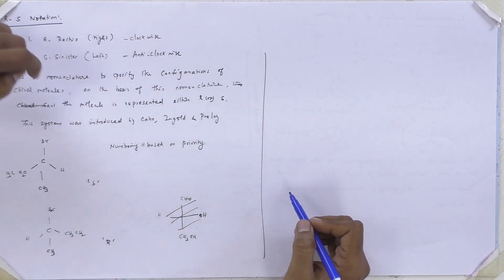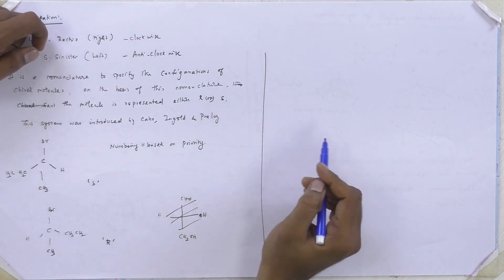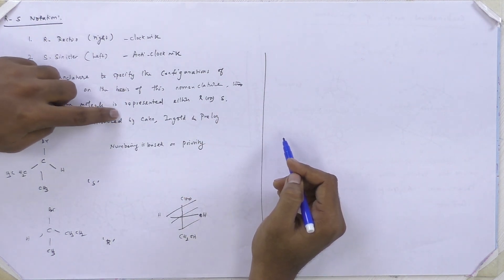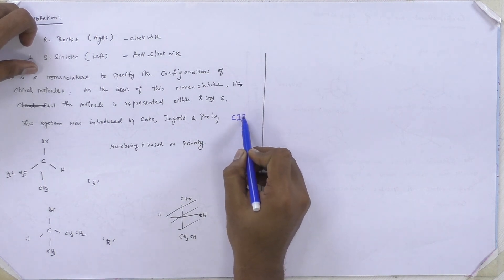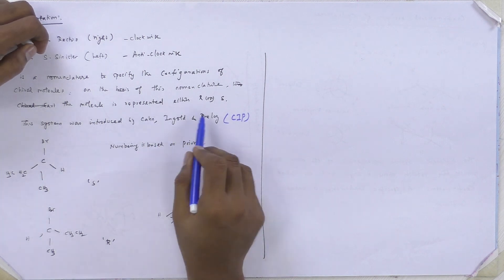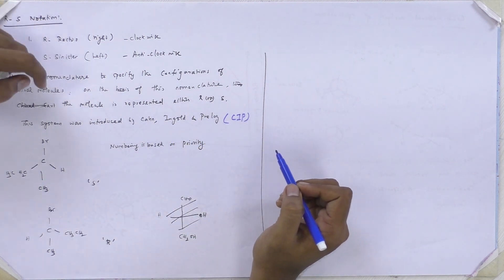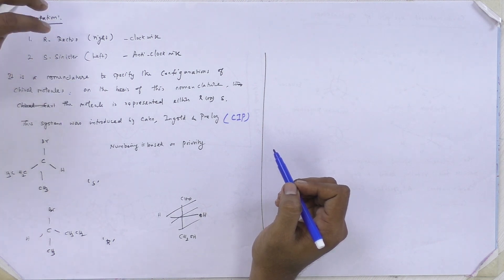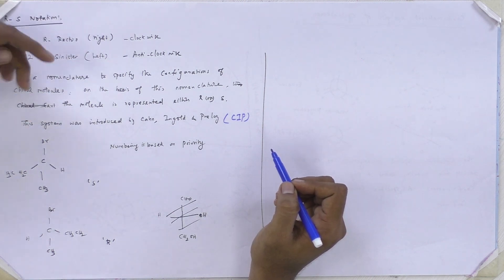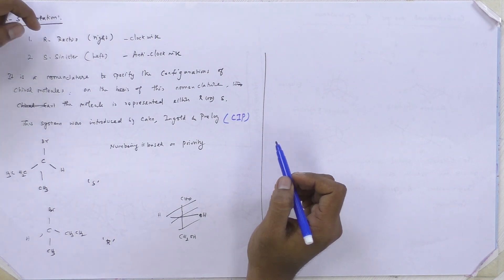Based on this nomenclature system, a molecule is represented as either R or S. The system was introduced by Cahn, Ingold, and Prelog — CIP. So the CIP rule: first we give the numbering, and the numbering is based on priority — that is, based on atomic number.